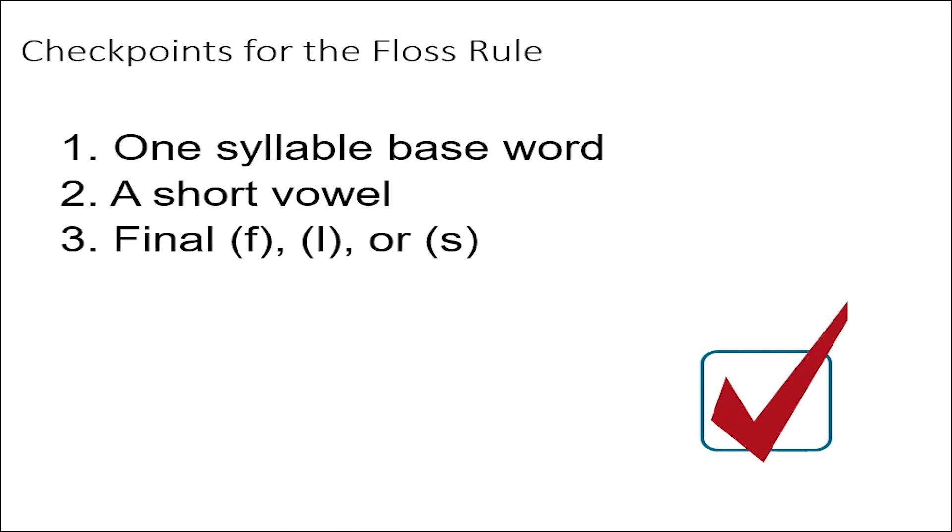The three checkpoints for this rule are one syllable base word, a short vowel, and final F, L, or S. If all the checkpoints are present, double the final F-L-S. Now, let's try your knowledge of the floss rule.